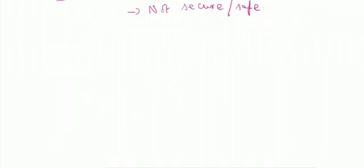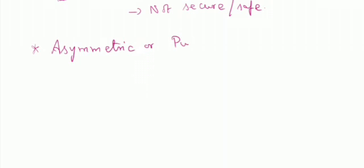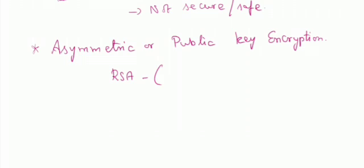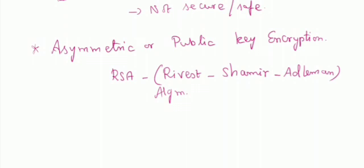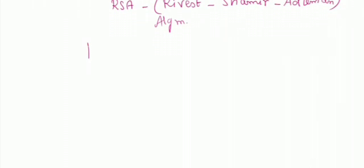Next we can move on to asymmetric or public key encryption. Here it is going to use an algorithm called the RSA algorithm. RSA stands for Rivest, Shamir, and Adleman. Together it is called the RSA algorithm. Here they are going to use two pairs of keys — that is your private key and your public key.